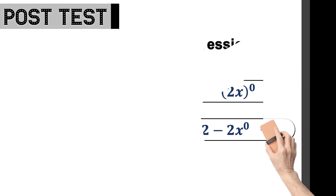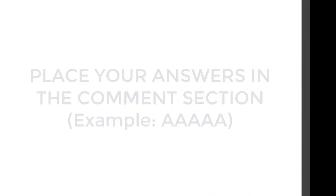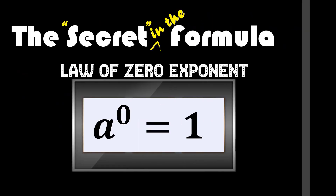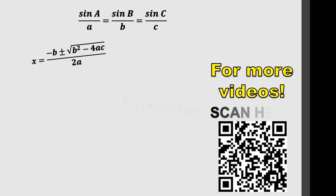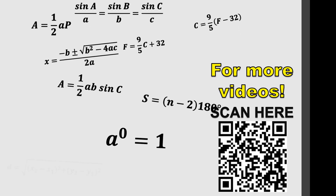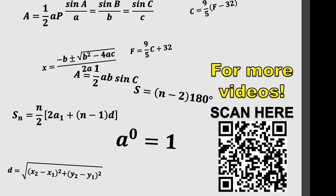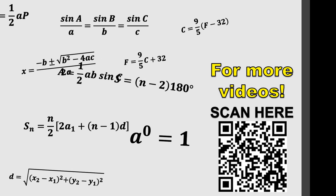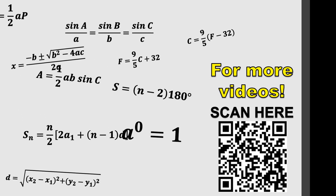With your answers, I wish that you comment them in our comment section. This has been another episode for the secret in the formula, mainly concerned with the law of zero exponent, which tells us that any expression raised to the power of zero will always be equal to one. For more videos, scan the QR code here or visit the YouTube channel for other series. Thank you for your time. See you soon. Goodbye, everyone.